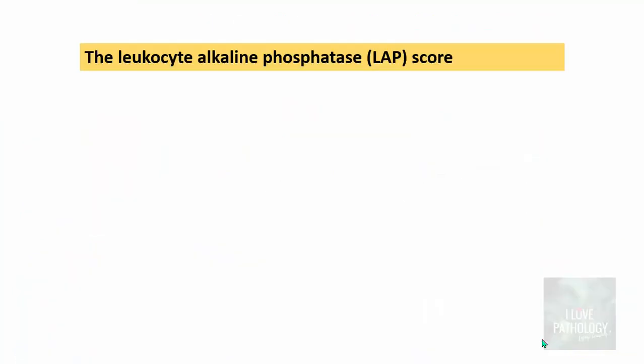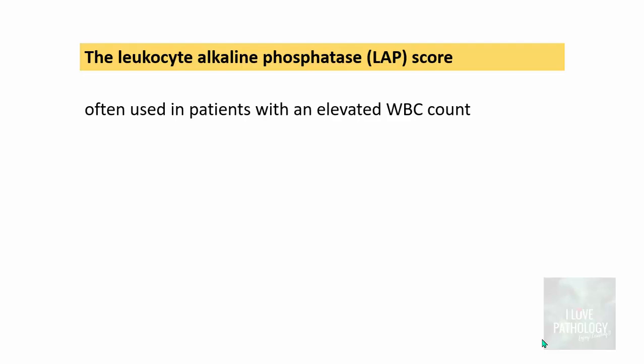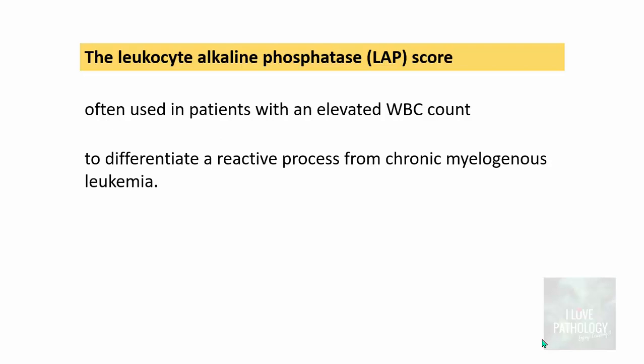What is this leukocyte alkaline phosphatase score? This score is often used in patients with an elevated WBC count to differentiate a reactive process from chronic myelogenous leukemia. The score will be low in CML, that is chronic myelogenous leukemia, and high or normal in a reactive process.